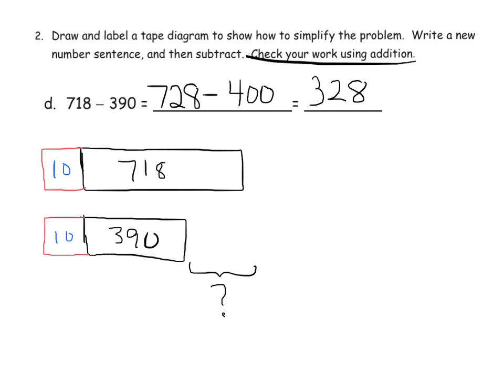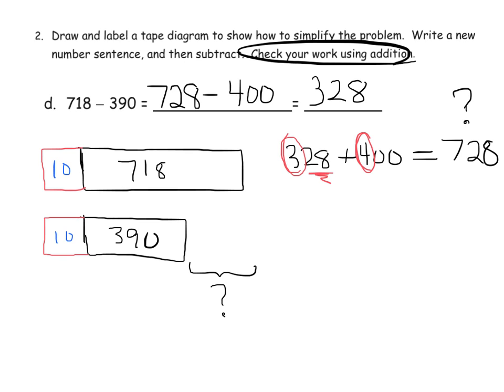So now we need to check using addition. So we're going to add 328 plus 400. And do we get 728? Is that our answer when we add? And sure enough, when we add 300 plus 400, that gives us 700 plus the 28 is 728. So sure enough, we've done our subtraction correctly.